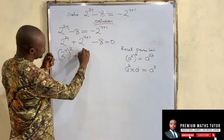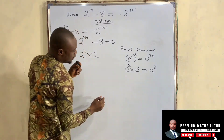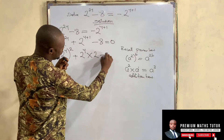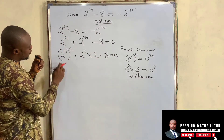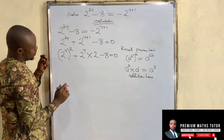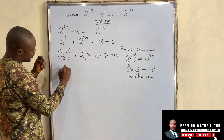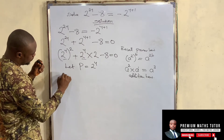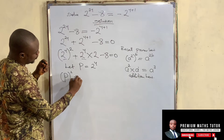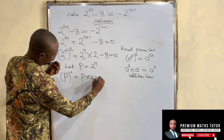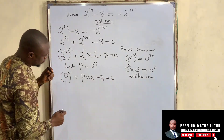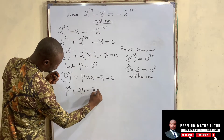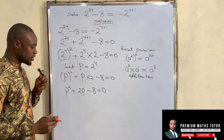Applying these laws, we get (2 to the power of y) squared, plus 2 to the power of y multiplied by 2, minus 8 equals 0. Since I have 2 to the power of y appearing twice, let's define p equal to 2 to the power of y. So I now have p squared plus p times 2 minus 8 equals 0, which is p squared plus 2p minus 8 equals 0. This is a perfect quadratic equation.